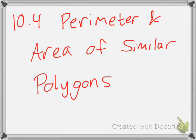Today we are talking about lesson 10.4, the perimeter and area of similar polygons. Not too complicated of a lesson, so this shouldn't take too much of your time. Let's look at an example first and see if we can find a pattern.